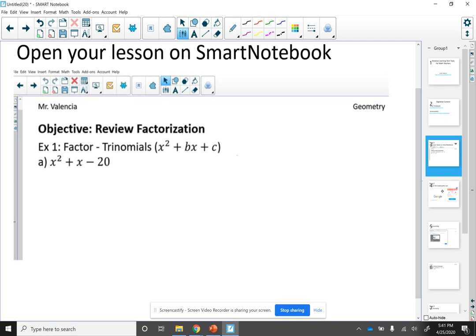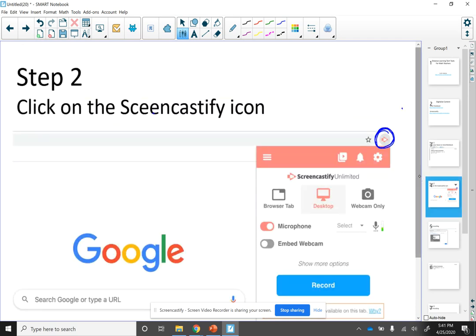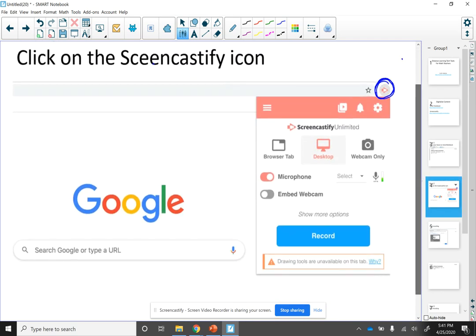And then you are also going to go to Google Chrome. When you open Chrome, you're going to have this option on the right side. This is the Screencastify icon. You're going to click on it and then it's going to open up this menu.